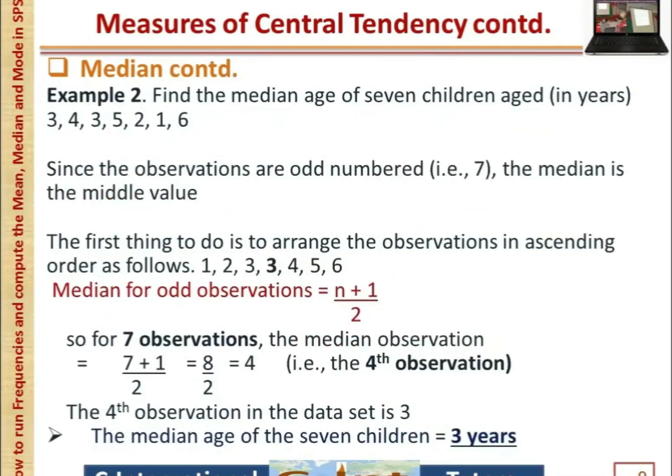For example, to find the median age of seven children with the ages shown: since the observations are odd-numbered, the median is the middle value. Arrange the observations in ascending order. For the seven observations, the fourth observation is the median, which equals three years.